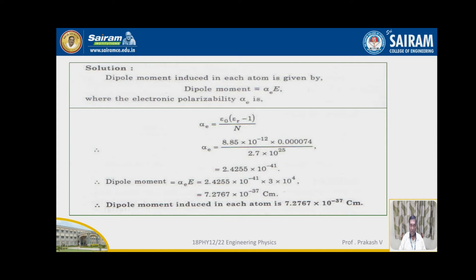The formula for electronic polarizability alpha_e is equal to epsilon_0 × (epsilon_r − 1) / n. After substituting all the parameters, the value of alpha_e is calculated as 2.4255 × 10⁻⁴¹. The dipole moment is given by alpha_e × E, and after substituting the values, the dipole moment is calculated as 7.2767 × 10⁻³⁷ coulomb-meter.